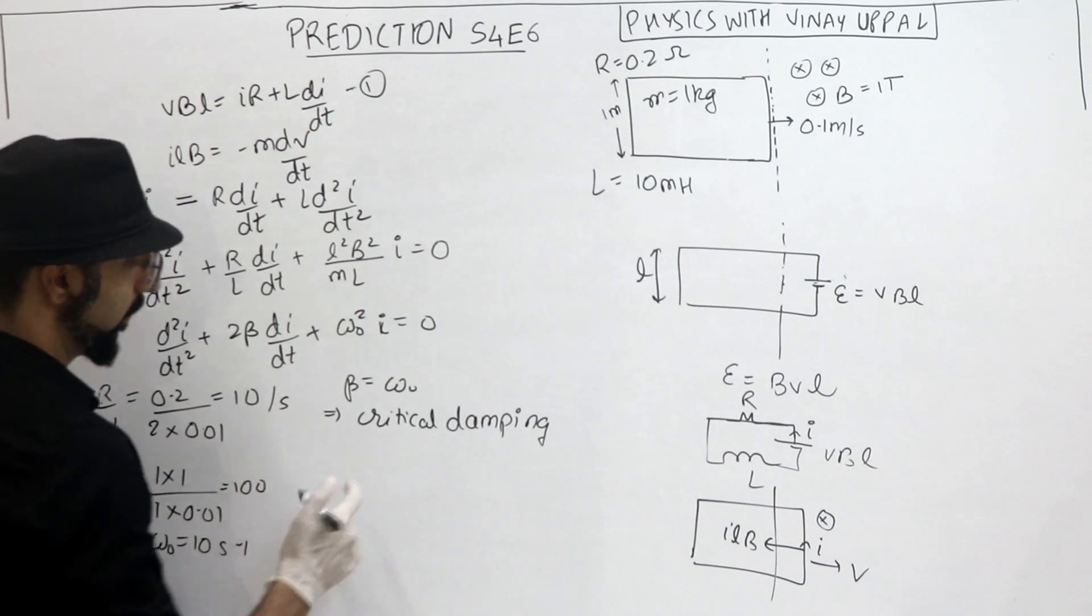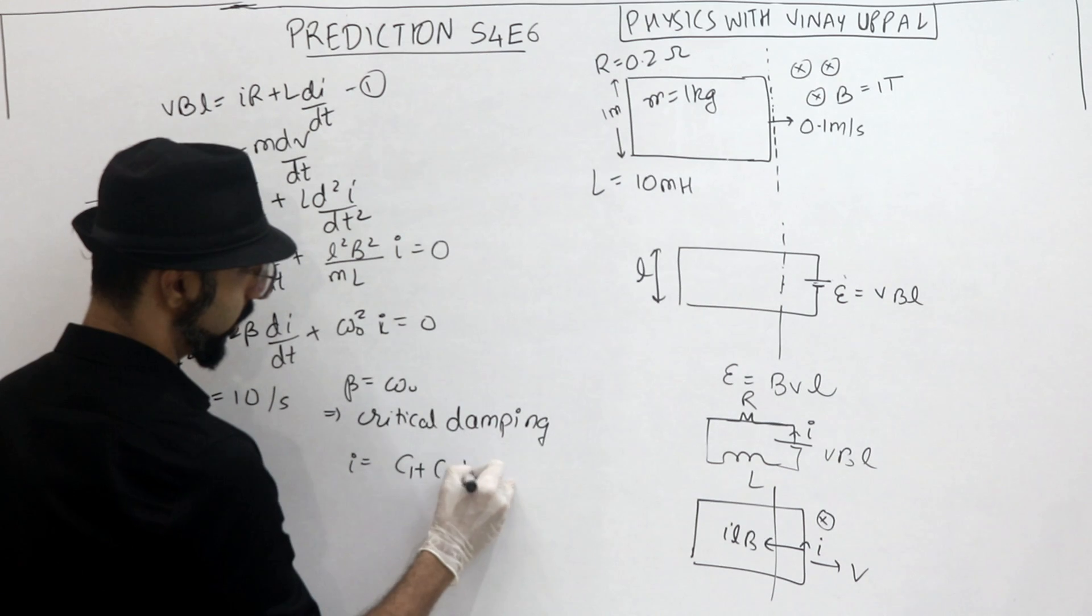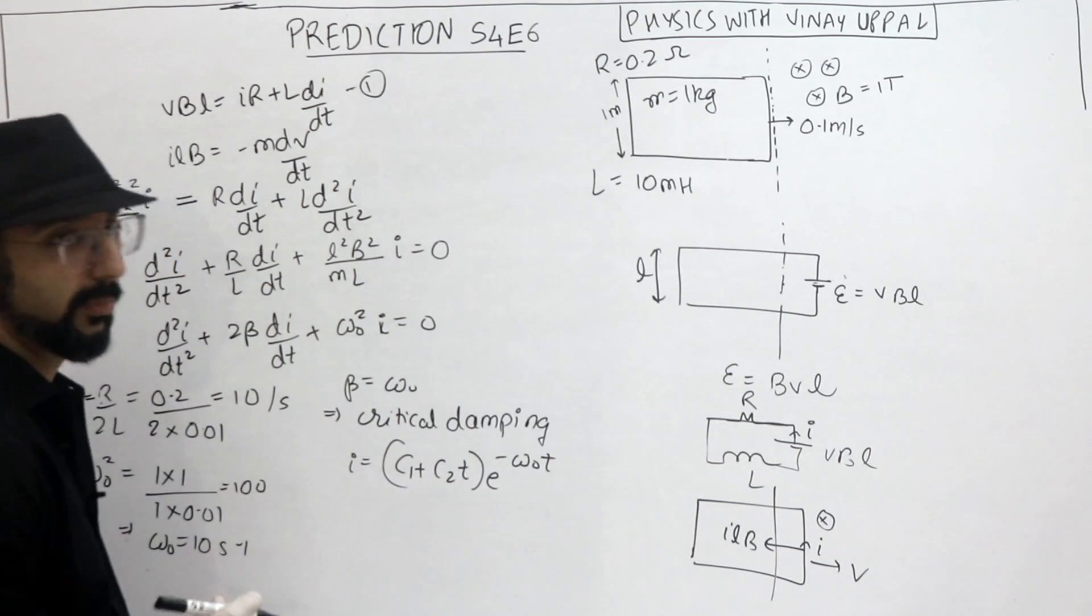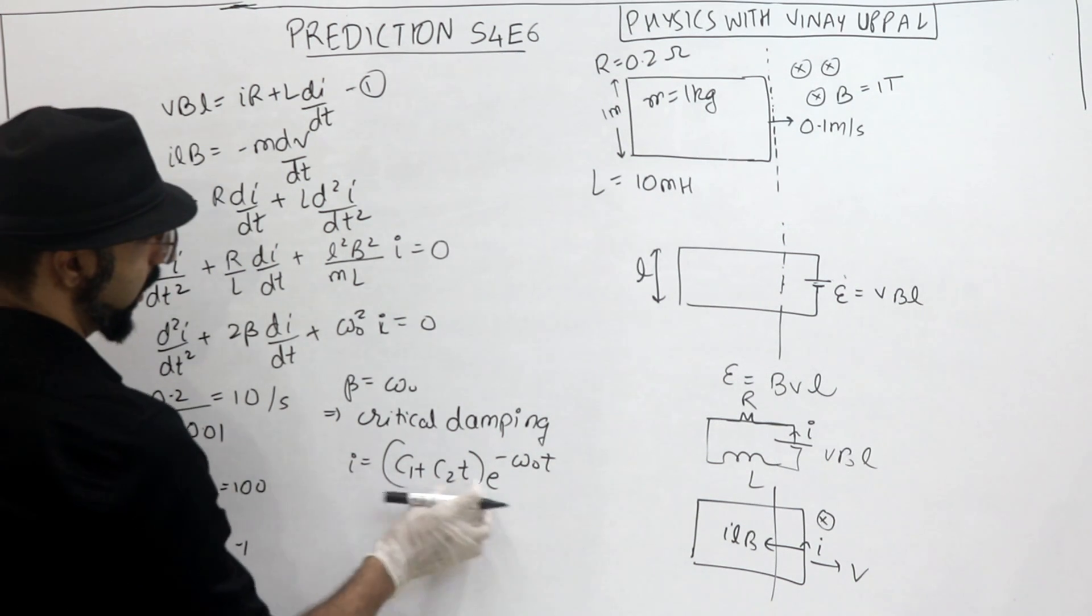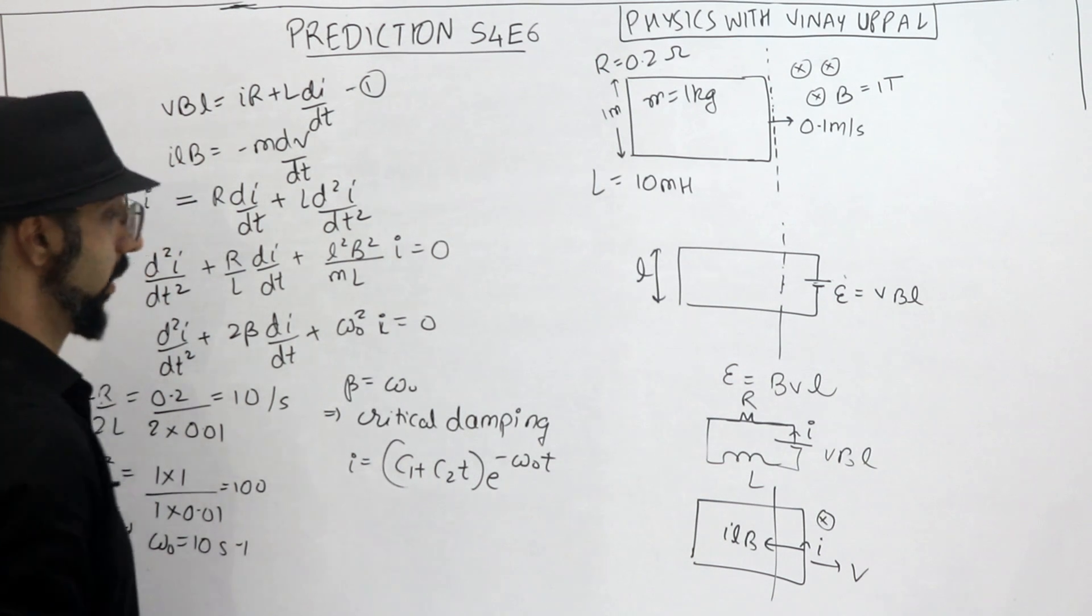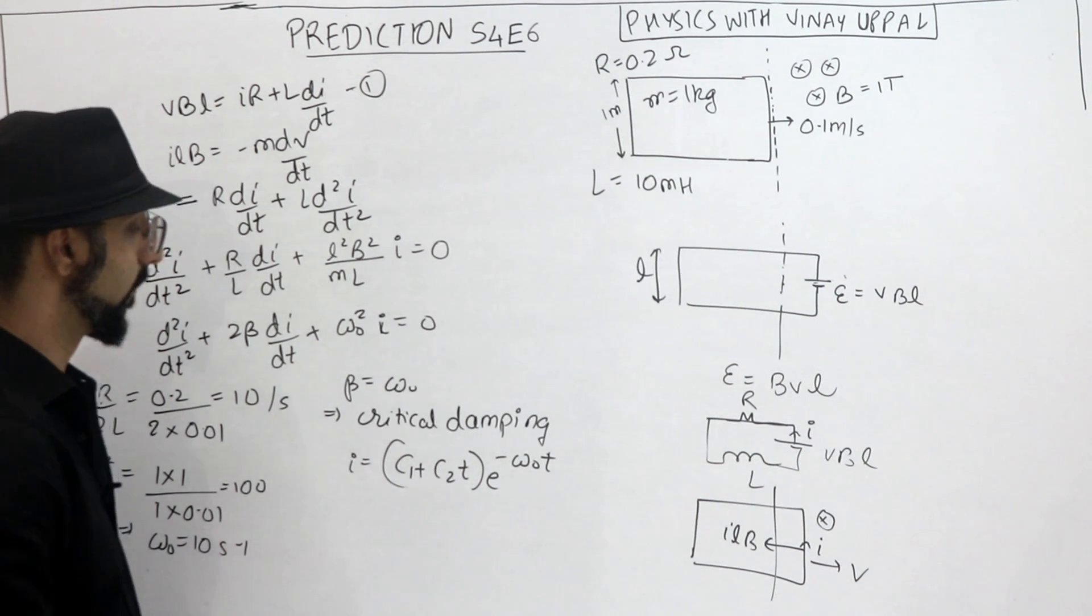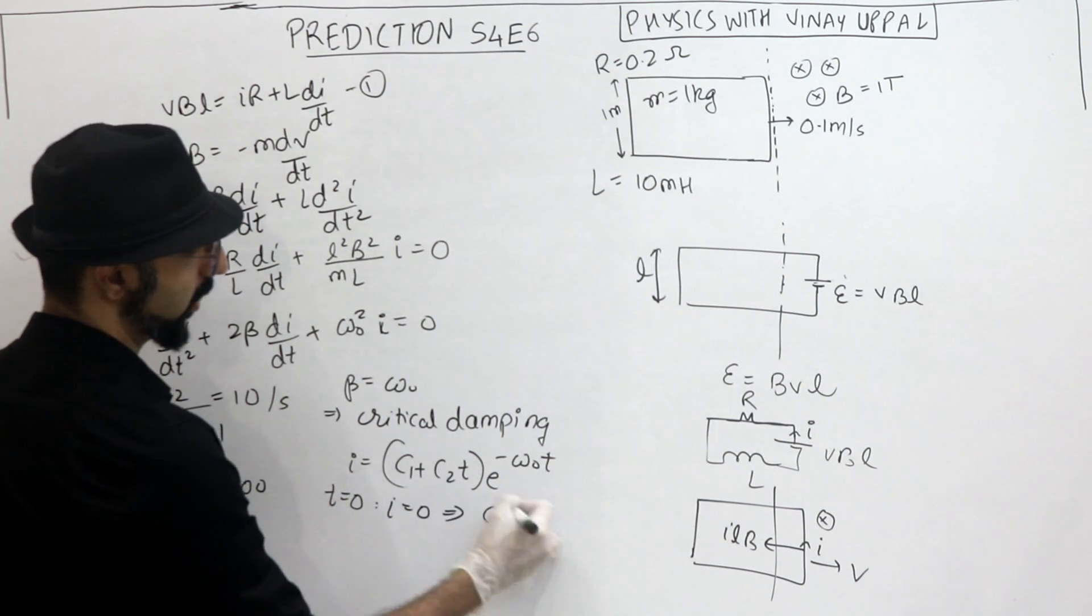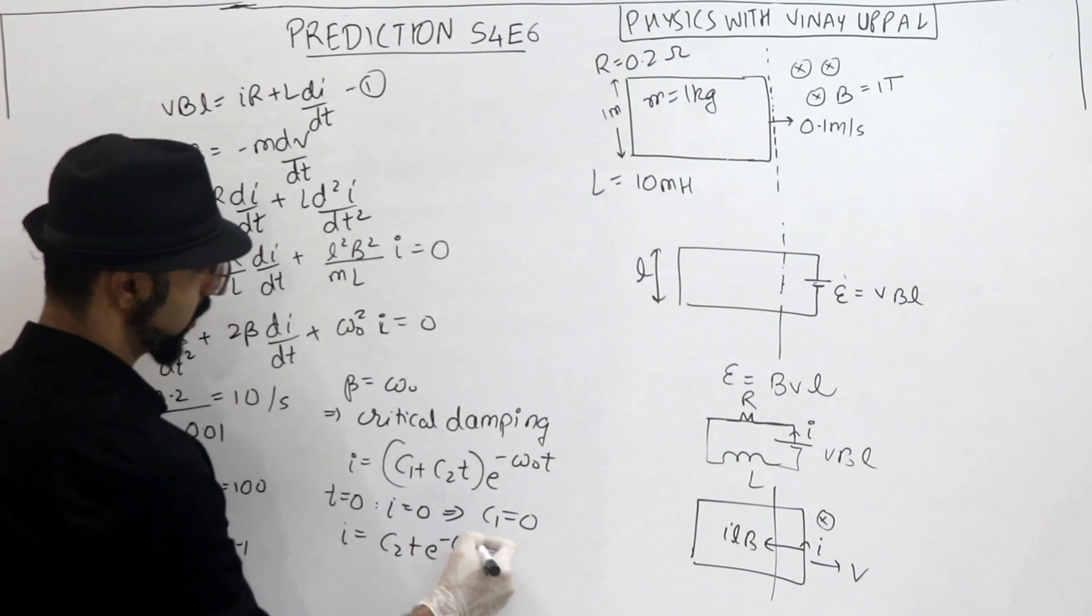In critical damping, the current, the solution that you should know is i(t) = (C1 + C2×t) × e^(-β×t). C1 and C2 are constants that will be determined by some initial conditions, which we will do. Okay? So C1 plus C2 t into this exponentially decreasing term. Alright. So now let's find out C1 and C2 ka value. So first, t equal to 0, current is 0. So C1 ka value is 0. Right? So current merah kya ban ga? C2 t into e raised to minus beta t.